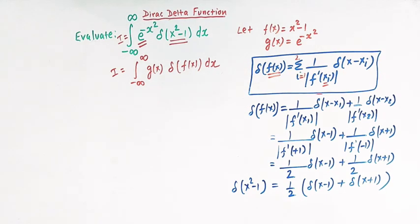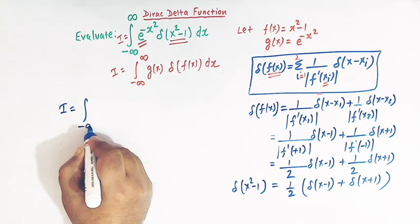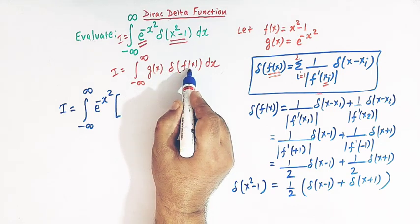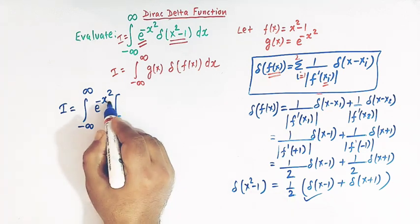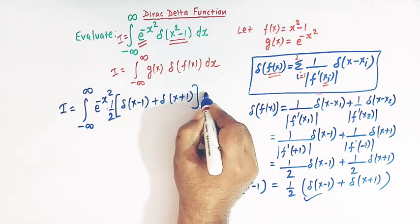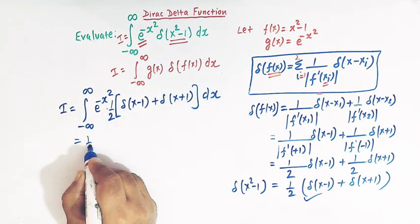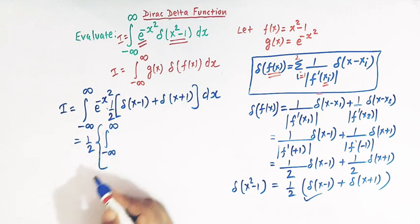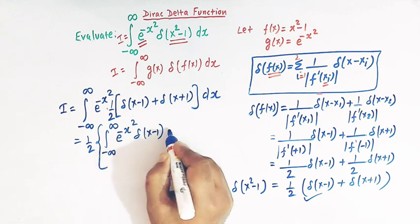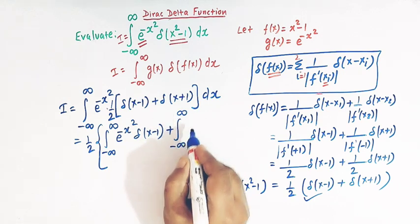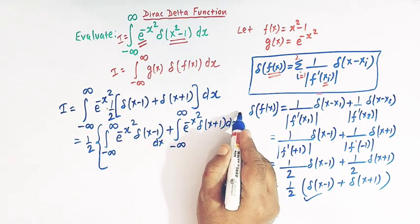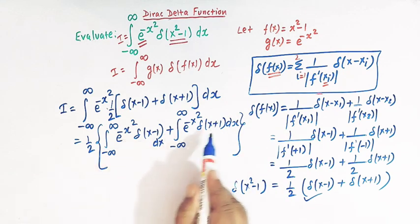Now this integral I can be written as the integral from minus infinity to infinity of e raised to minus x square, times half times delta of x minus 1 plus delta of x plus 1, dx. Taking the half outside the integral, we have one-half times the integral of e raised to minus x square, delta of x minus 1 dx, plus the integral of e raised to minus x square, delta of x plus 1 dx.